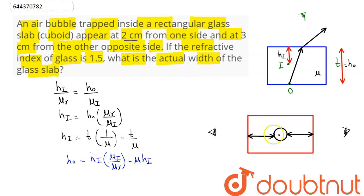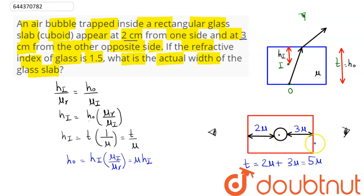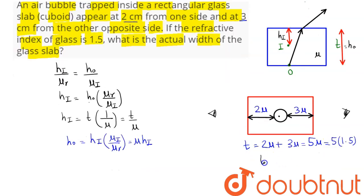From the first side, the real thickness is 2μ, and from the other side it is 3μ. The net thickness of the glass slab is their sum: 2μ + 3μ = 5μ. Since μ = 1.5, the real thickness = 5 × 1.5 = 7.5 centimeters. So the actual width of this glass slab is 7.5 centimeters.